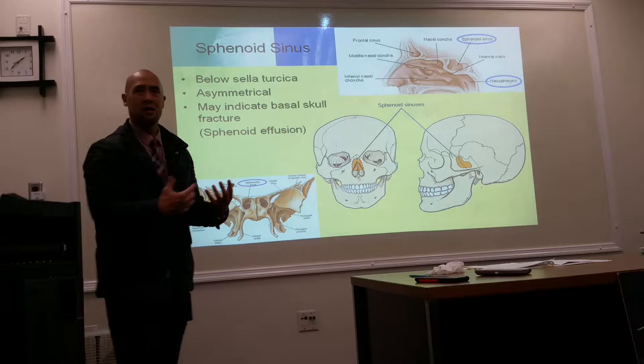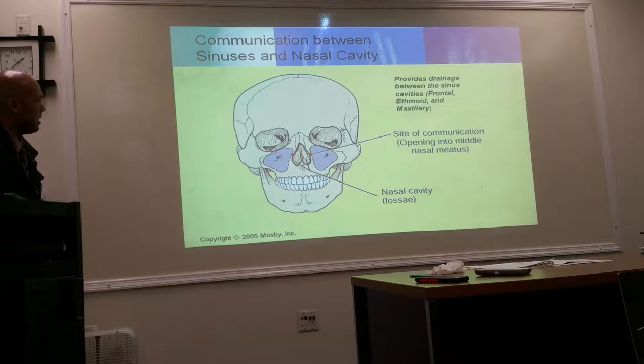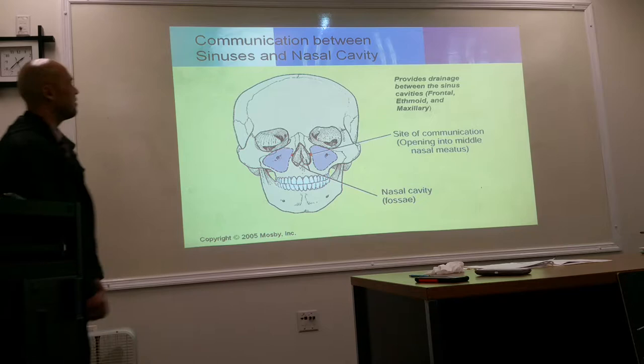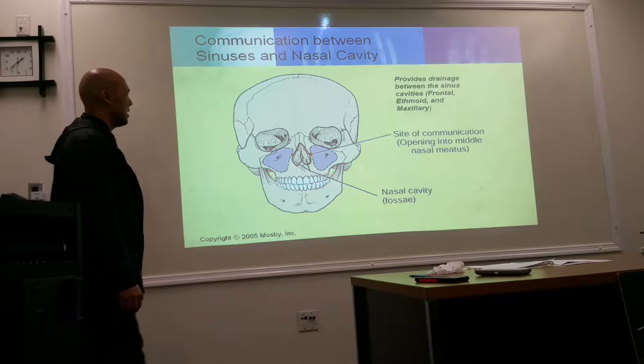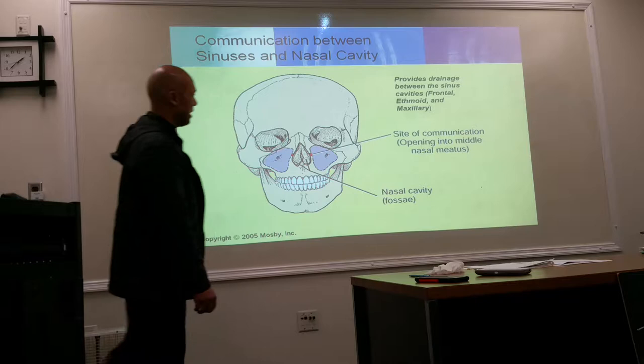The nasal cavities and sinuses provide drainage for the frontal, ethmoid, and maxillary sinuses. The area of this communication is located within the nasal meatus — meatus just means passageway — and this is all found within the nasal cavity.